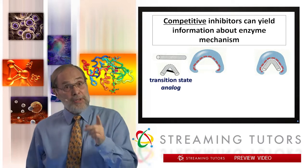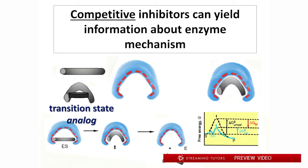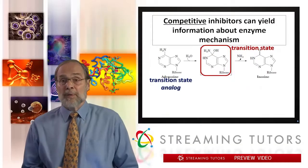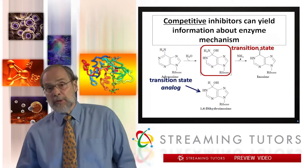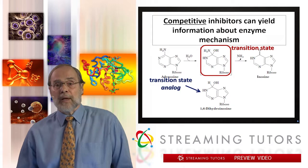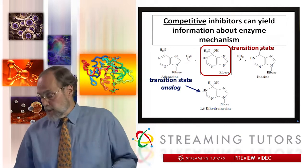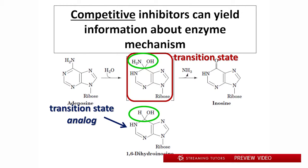That's what a transition state analog is expected to do if this picture of enzyme catalysis is right — if enzymes are distorting substrates toward the transition state, taking advantage of the energy of association to feed that otherwise energetically unfavorable achievement of the transition state. Transition state analogs should not just inhibit this reaction, they should inhibit it powerfully, with much better binding affinity than the normal substrate itself. Back to our adenosine deaminase reaction: it's possible to synthesize a stable molecule, dihydroinosine, which looks a lot like the transition state intermediate, with the hydroxyl and amino groups projecting in the same configuration.